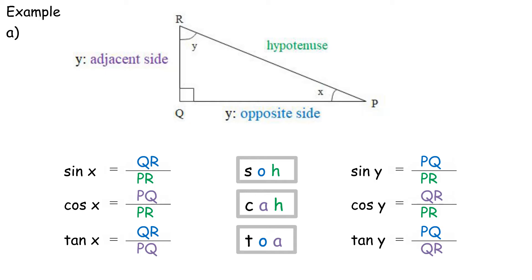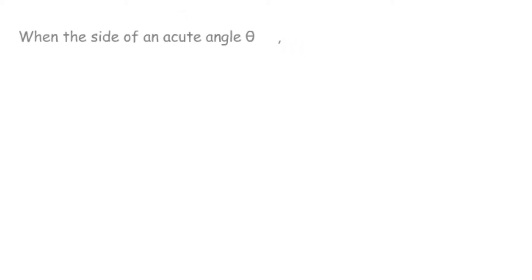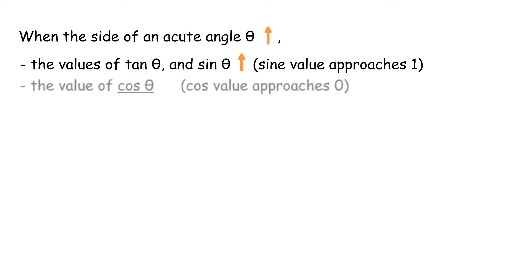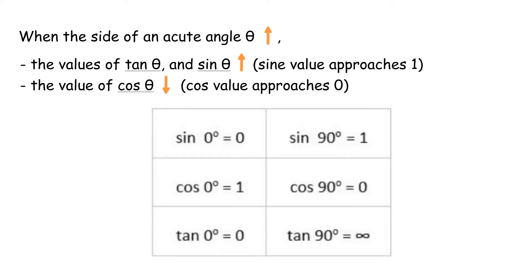When the size of an acute angle θ increases, the values of tan θ and sin θ increase, and the sine value approaches 1. The value of cos θ decreases, and the cos value approaches 0.